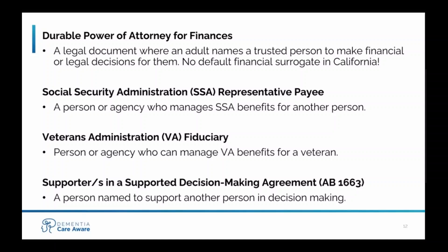Another legal and financial decision-making tool is the supported decision-making agreement, where a person can name another person to assist them — not make decisions for them or sign any forms, but help them in decision-making. Supported decision-making agreements are a brand new tool in California, and their application to people with dementia is still unclear. We always recommend that people have an advanced healthcare directive, a power of attorney for finances, and a named advanced Social Security representative payee. Supported decision-making agreements can be helpful in early stages of dementia, but are not a replacement for these other tools.